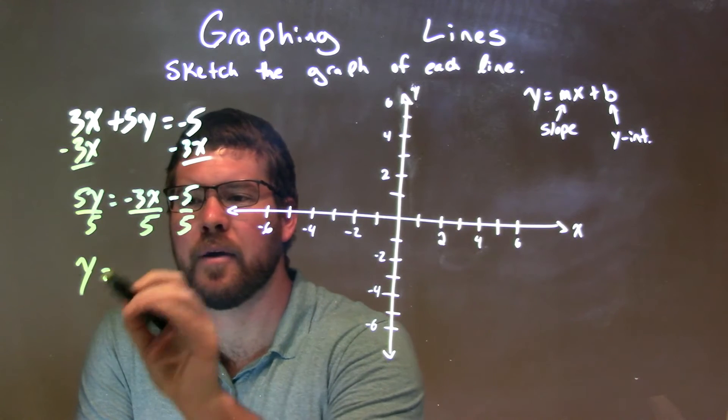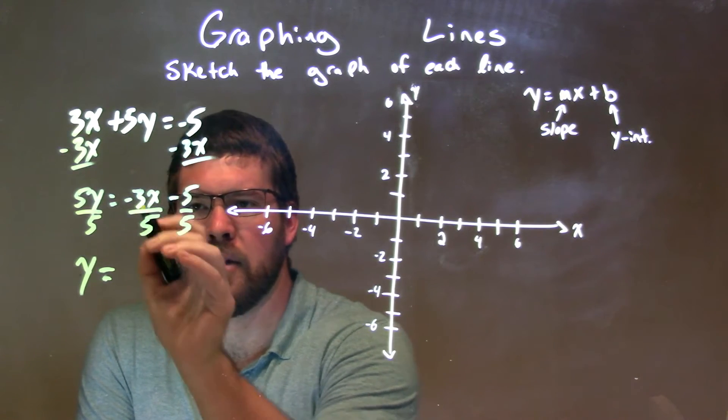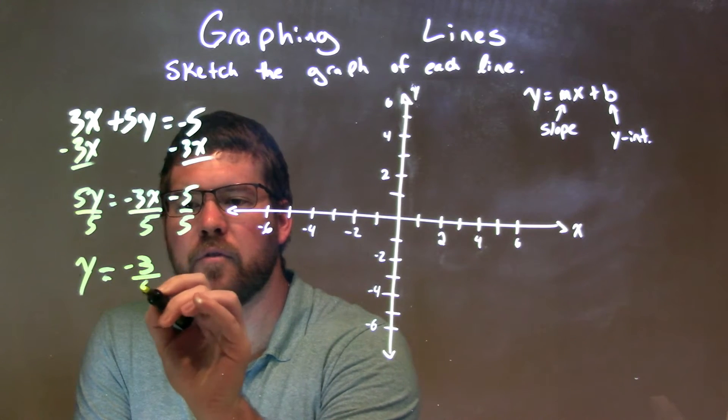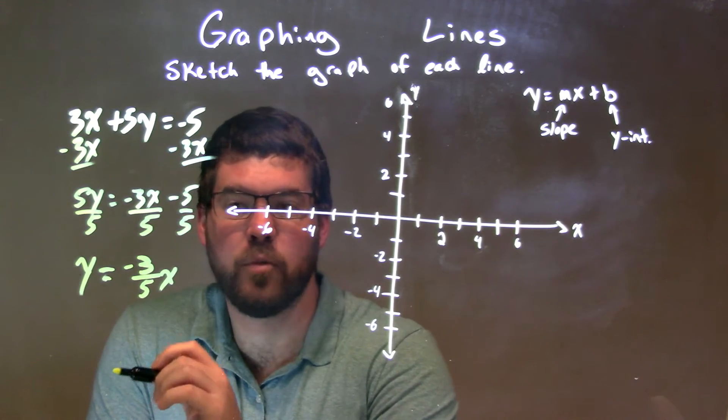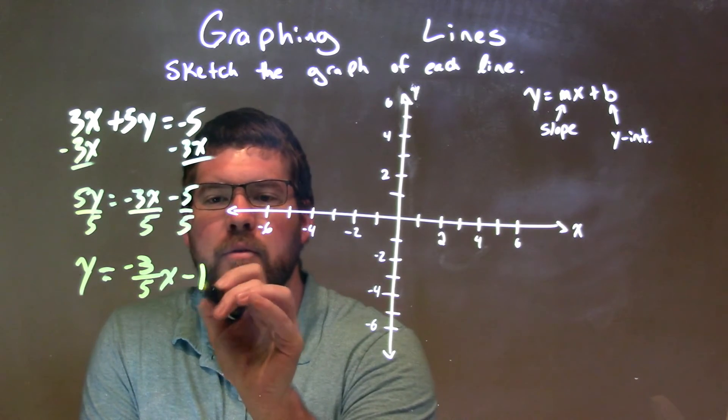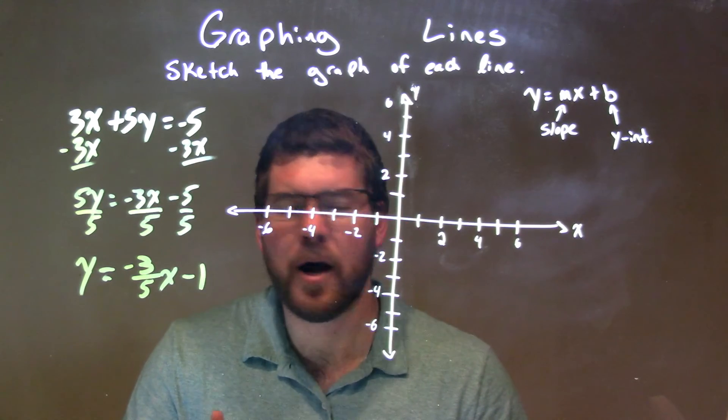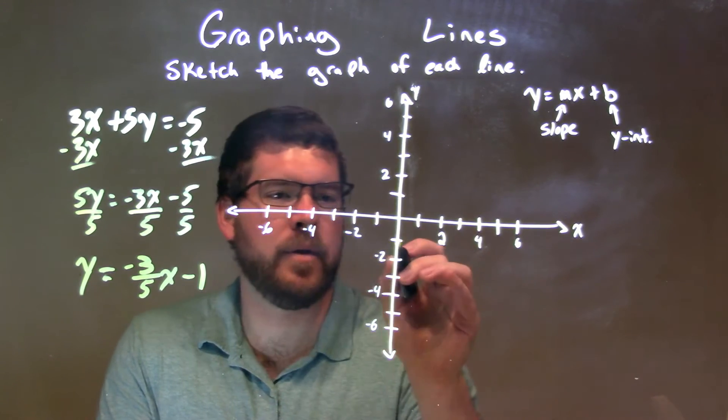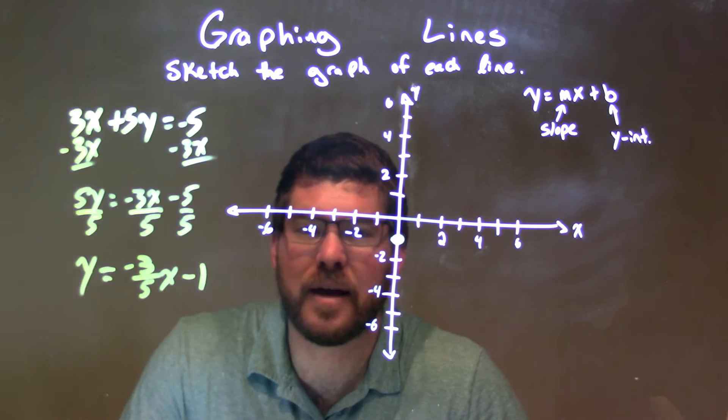So y is by itself now. So y equals our slope here, our m-value in front of x, right? It is negative 3 over 5. And then 5 divided by 5 is 1, so we have minus 1. So now we have our slope-intercept form. Our y-intercept is negative 1, that b-value right there. And our slope is negative 3 fifths.